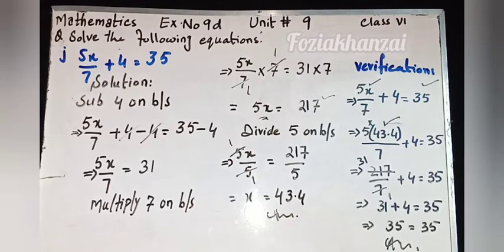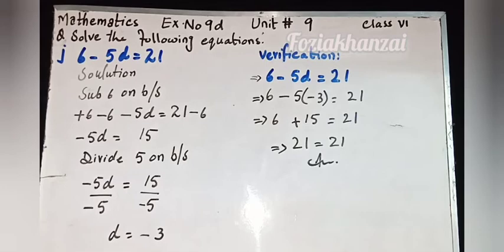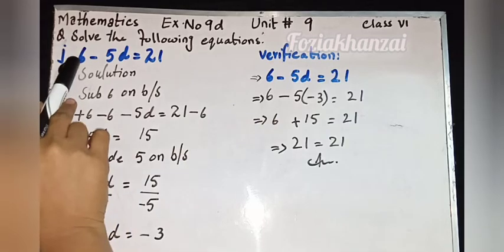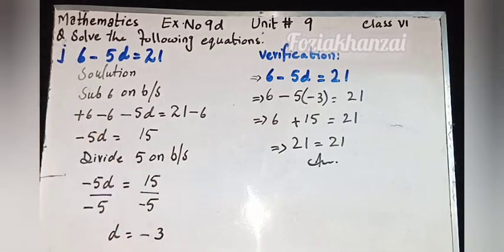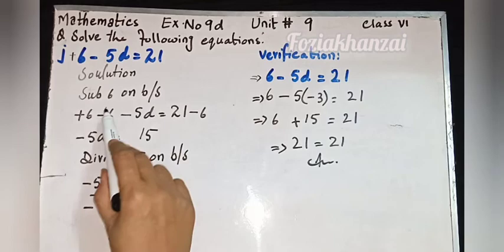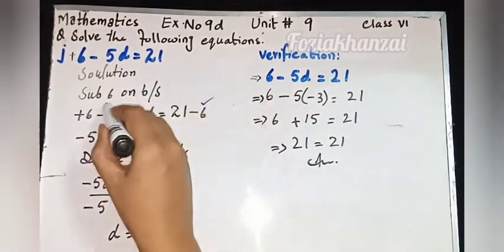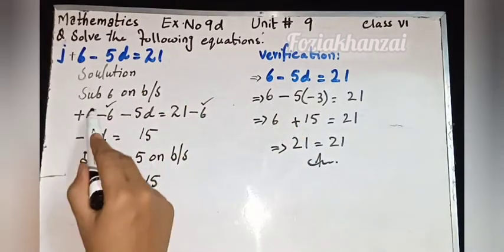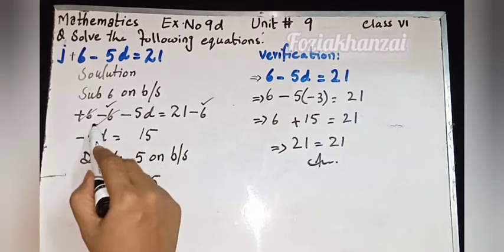All parts from A to J apply the same method. Now the last part, J1: 6 minus 5d is equal to 21. Additive property is given here — the hidden sign is plus. So we apply subtractive property: subtract 6 on both sides.